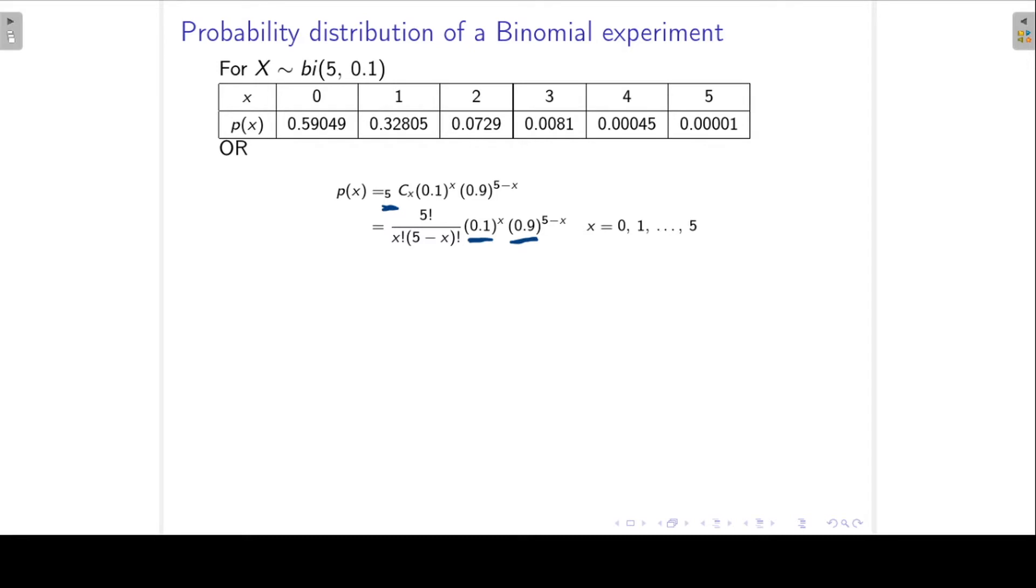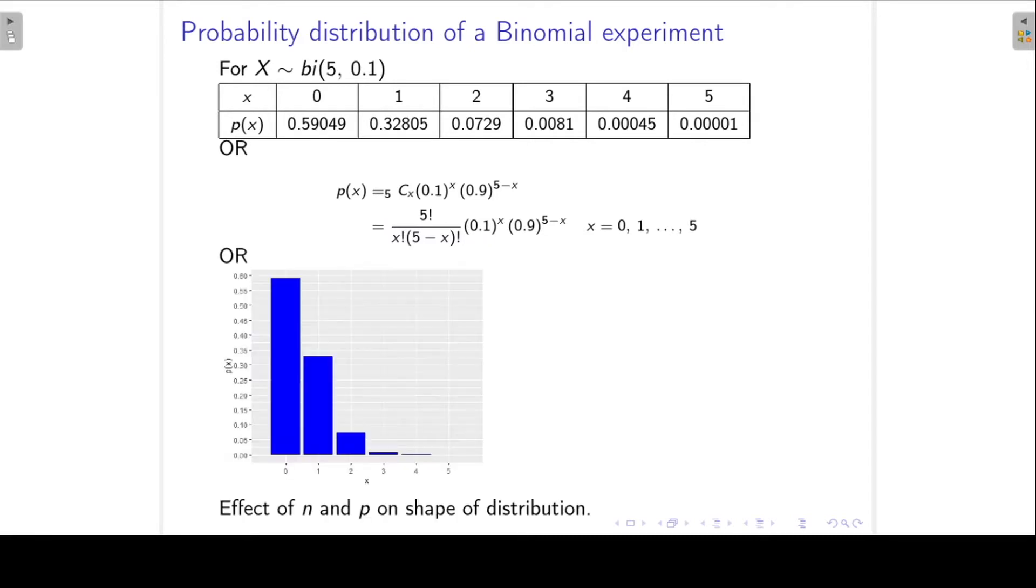We can also illustrate this distribution in a graph. So here you can see that on my horizontal axis, I've got the possible values of x, and then we can read off the probabilities for each of the values of x.